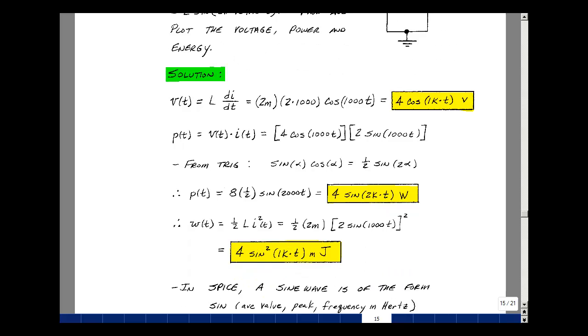The energy absorbed by the inductance is 1/2 Li squared, so 1/2 times 2 mH times the sine of 1,000t, the amplitude of 2, and squared. And that gives me 4 sine squared of 1kT millijoules.